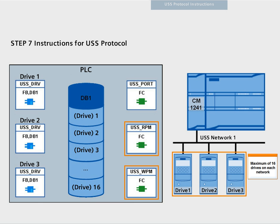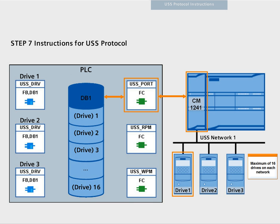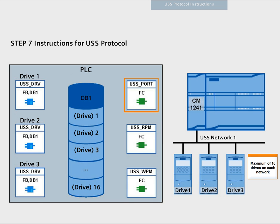The two functions must also be called from the OB main program. The USS port function controls the data transfer between the controller, the communication module, and the drive in the USS network. Only one port function call per communication module is necessary. Each call controls a transfer to or from one single drive. The USS port function must be called frequently enough to prevent drive timeouts, which is why it is called from an interrupt OB so that current data is available for all program functions.